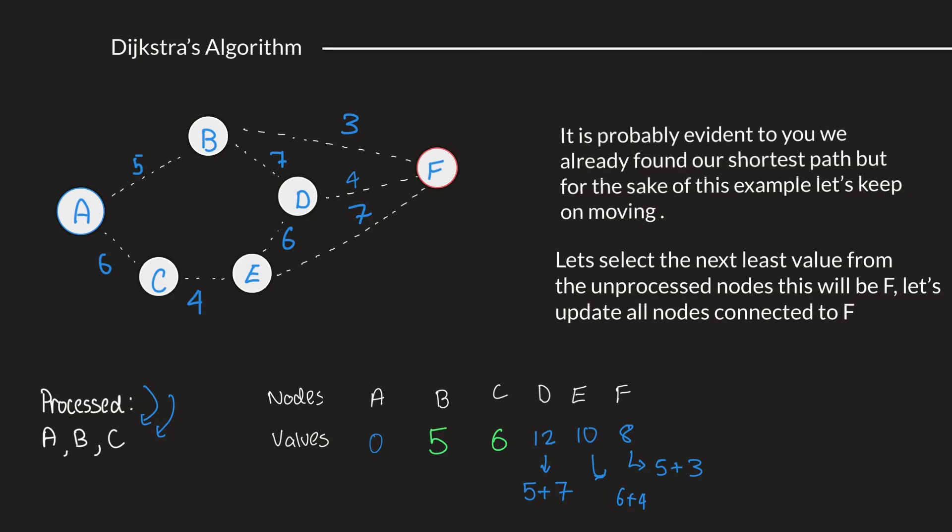At this point, it's probably evident to you, and that's good, that we've already found our shortest path from A to F. But, for the sake of this example, let's keep on moving. Let's select the next value from the unprocessed nodes, which has the least value. So, that would be F. Let's update all the nodes that are connected to F.